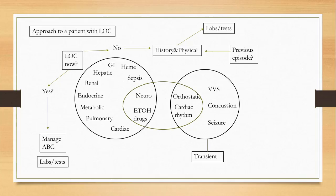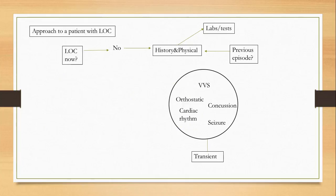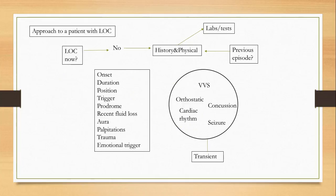If the patient had a transient loss of consciousness, these questions become the most important to ask in the history: onset, duration, position, trigger or prodrome, any recent fluid loss or palpitations, trauma, and emotional trigger. These are the things that will point us in one direction or the other.